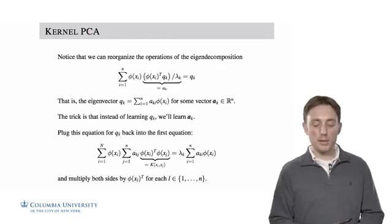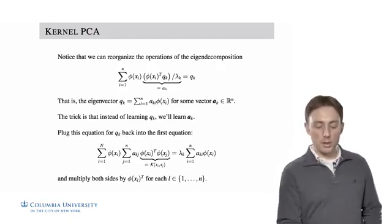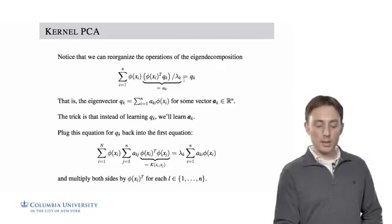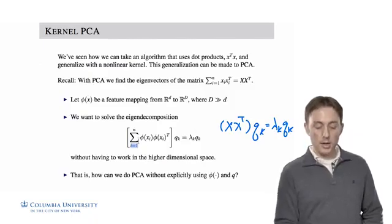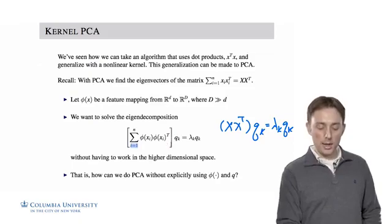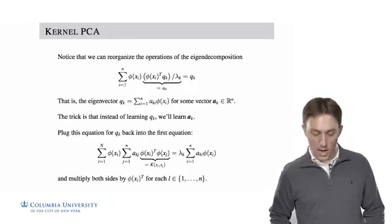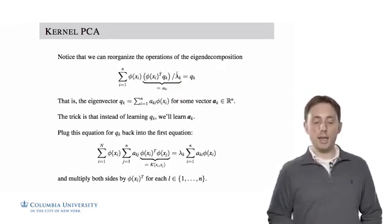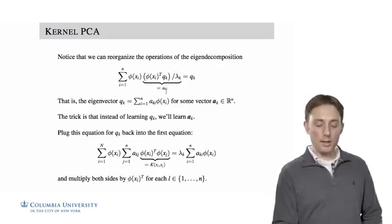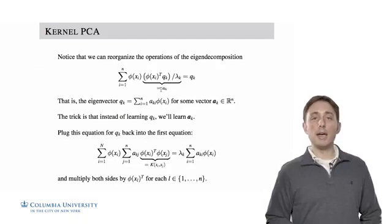Let's reorganize the operations of the eigendecomposition. Lambda_k was originally multiplied against the k-th eigenvector. Now I'm bringing lambda_k to the left side by dividing both sides by lambda_k. Also, I want to switch the order: I want to multiply my higher dimensional projection of x_i with the k-th eigenvector divided by the k-th eigenvalue, and I'm going to call that a sub k, i — where i indexes the data point and k indexes the eigenvalue-eigenvector pair.